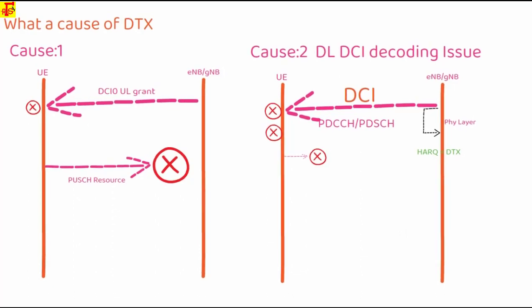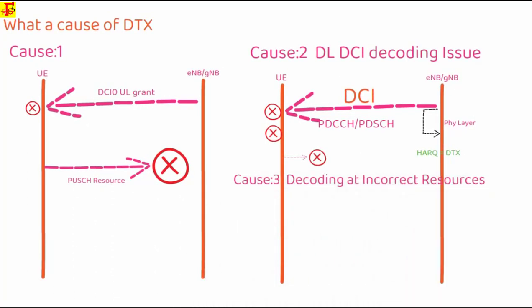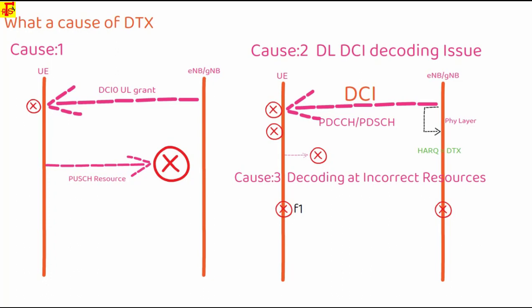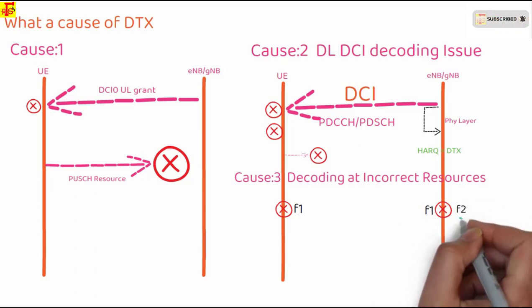Another reason for DTX is decoding at incorrect resources. This happens when the UE and eNodeB are out of sync with respect to the frequency resources where the HARQ is supposed to be transmitted. Basically, the UE transmits the HARQ on a different frequency resource.